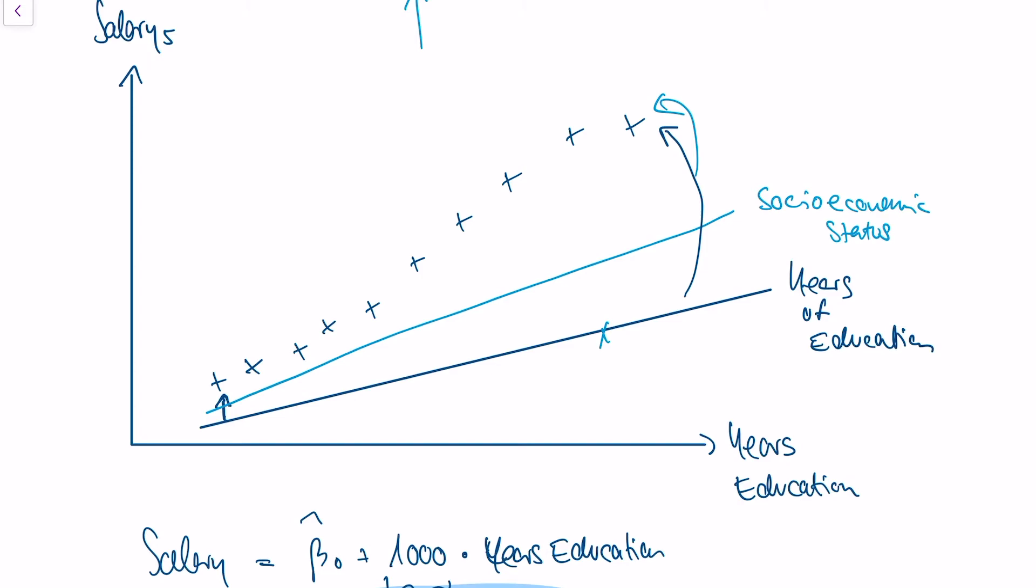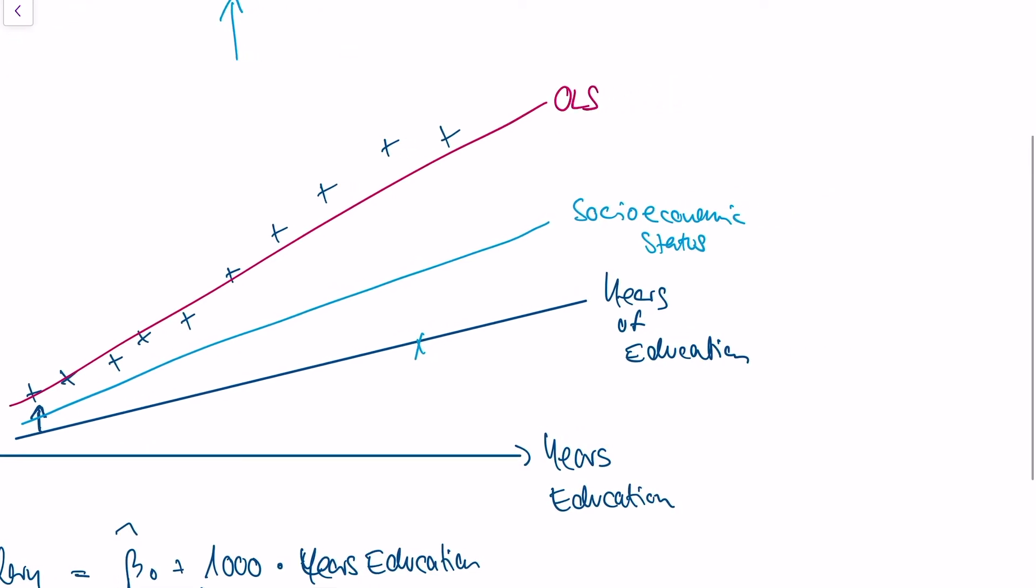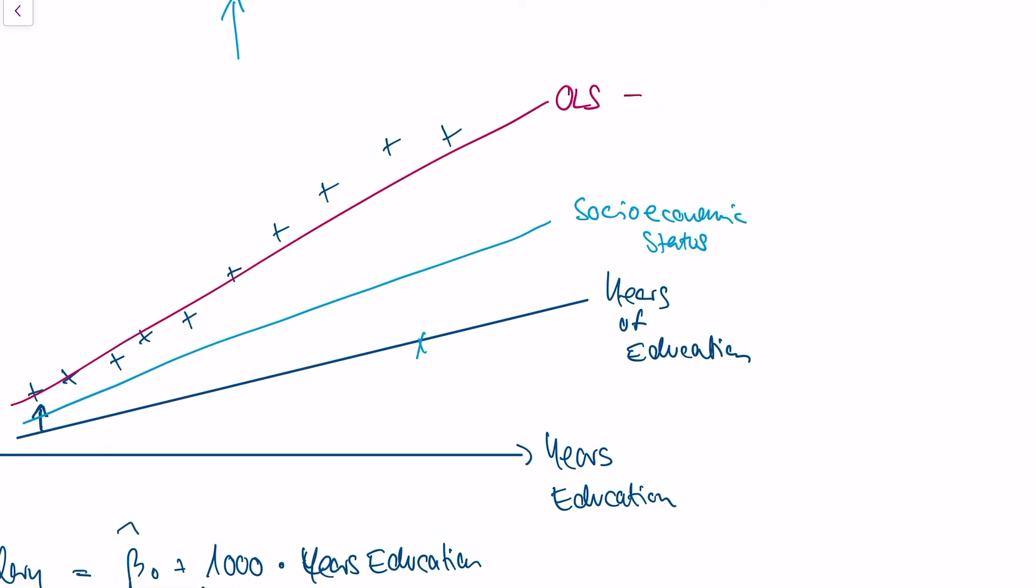And now you see why our individual estimation for beta one for the influence of years of education is wrong if we use OLS. So OLS will give you this estimate. But the slope of this line is representative to the effect of the socioeconomic status plus the effect of the years of education.